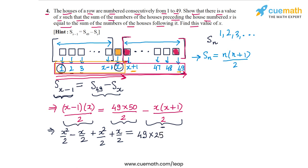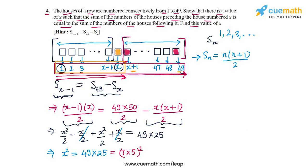The x/2 terms cancel out, leaving x² = 49 × 25. We can see that 49 × 25 is a perfect square — it is (7 × 5)². So x² = (35)², which means x = 35.